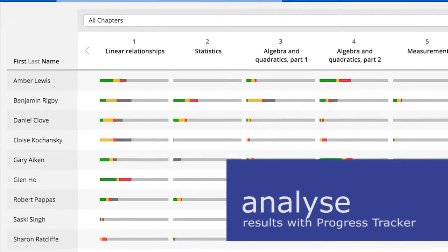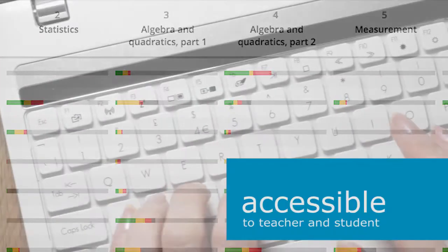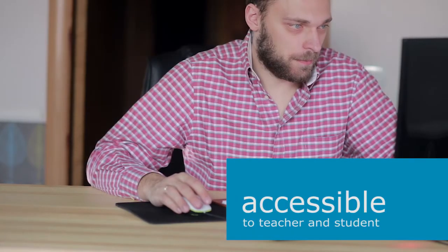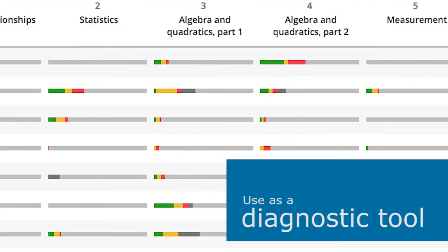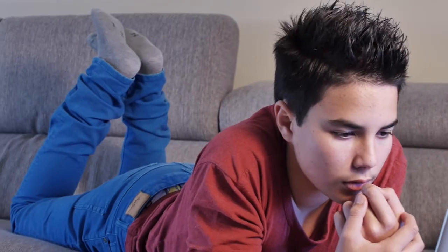The progress tracker is a dashboard of students' progress on questions and exercises accessible to both the teacher and the student. With the progress tracker, Lightbook Starter can be used as a diagnostic tool, allowing teachers to identify gaps in students' prior learning as well as to monitor students' progression through a topic.